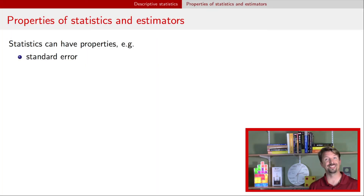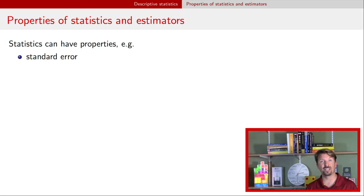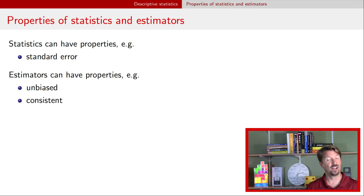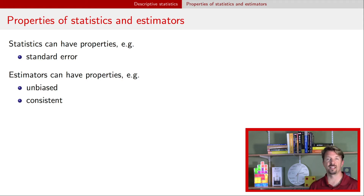Hi, Dr. J here with a continuing discussion about statistics. In a previous video, we were discussing statistics sometimes being estimators when their goal is to estimate a population parameter. In the video right now, we will discuss properties of statistics, in particular their standard error, and we'll discuss when estimators have properties called unbiased and consistent. At the end of the video, we will provide an example based on the binomial distribution in the context of a binomial estimator of the probability of success.